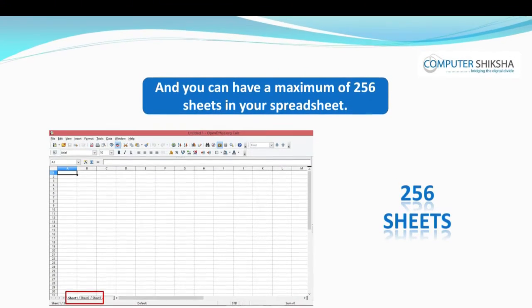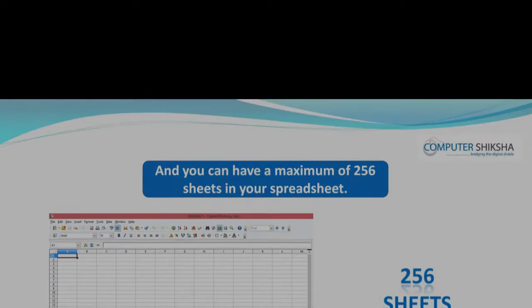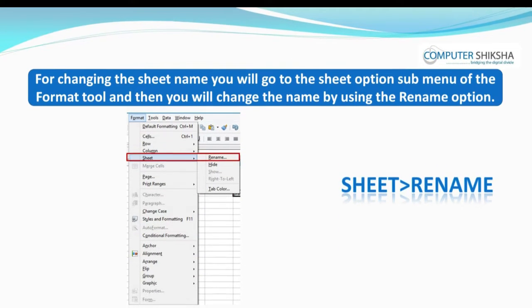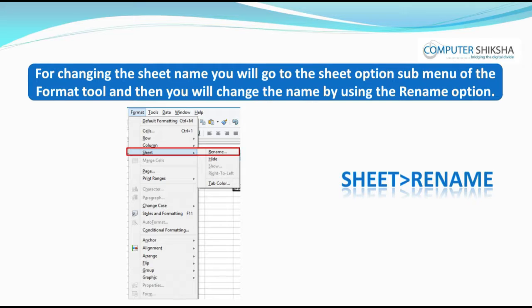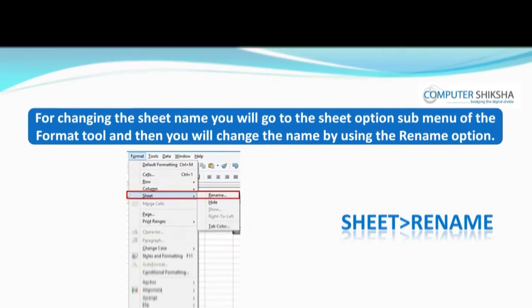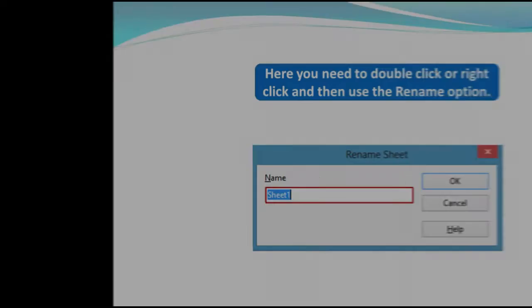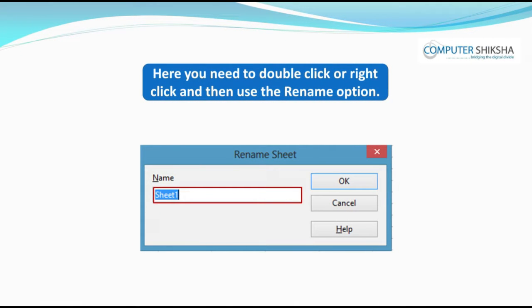This can vary with the version of the software. Do you know what you will need to do if you want to change the name of your sheet? For changing the sheet name, you will go to the sheet option submenu of the Format menu and then change the name using the Rename option. Or else, you can go to the sheet option just above the status bar, double-click or right-click, and then use the Rename option.